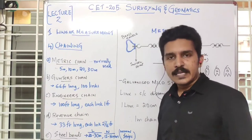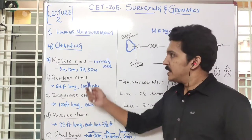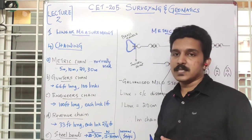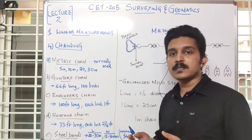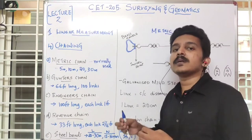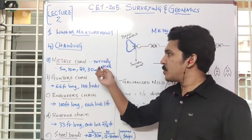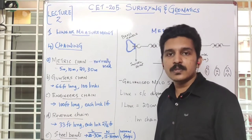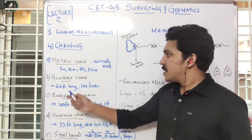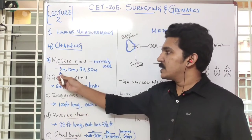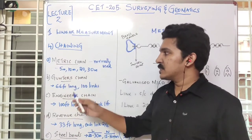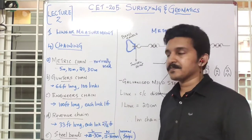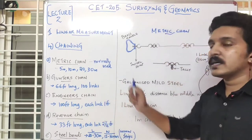The next method of linear measurement is the chain. In chain surveying, we use a normal chain, and there are different types available. Based on the purpose, we use a different type of chain. The most commonly used chain is the metal chain, which is what we use or see in our lab. The metal chain is available in lengths of 5 meter, 10 meter, 20 meter, and 30 meter.